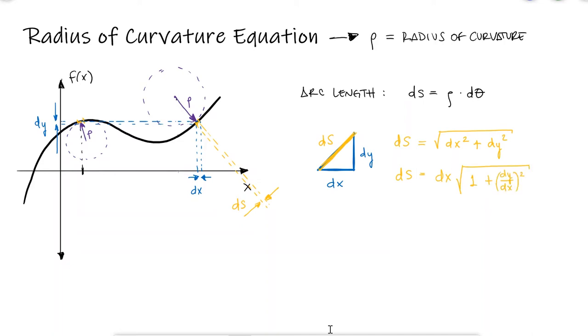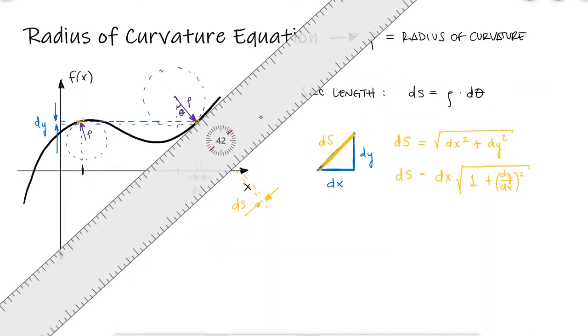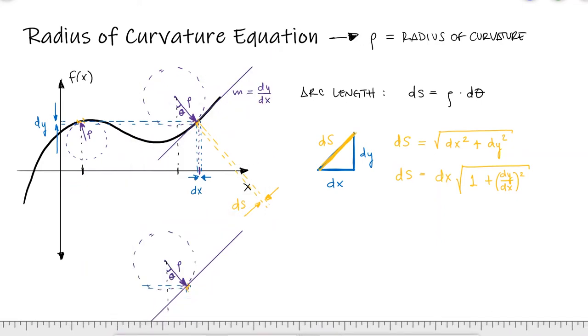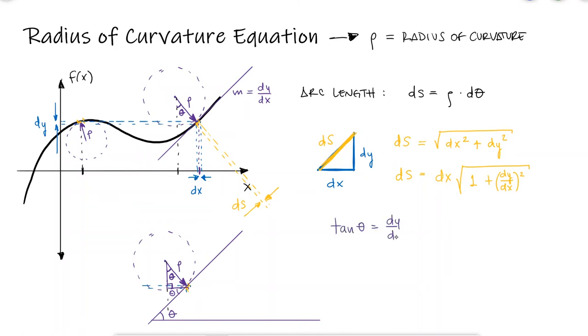For d theta, we would first start by defining theta as a function of the slope of the curve m for the point we're trying to calculate the radius of curvature for. From basic geometry, specifically complementary angles and alternate interior angles, we see that the tangent of angle theta is equal to dy/dx.